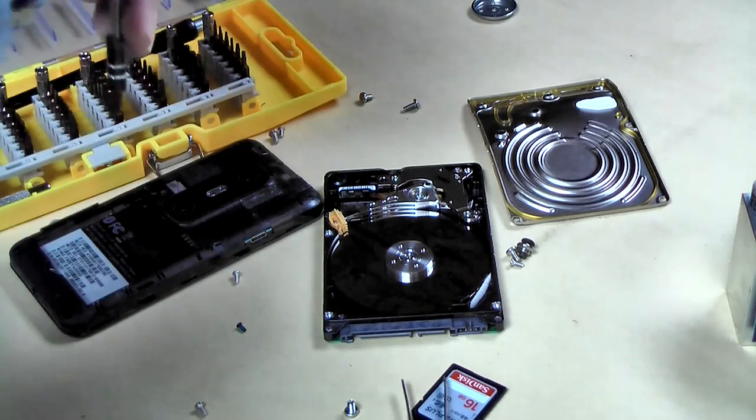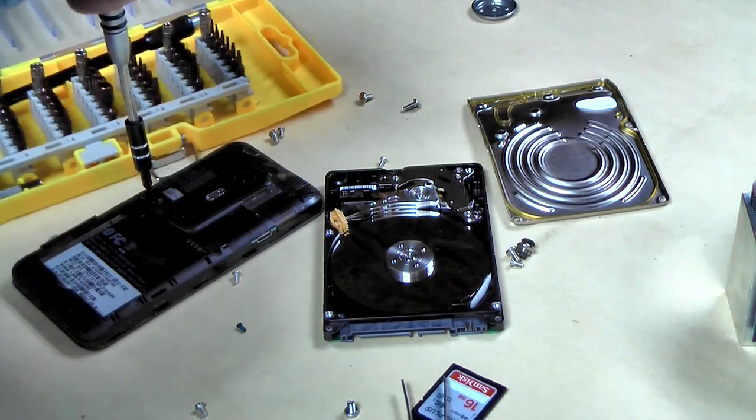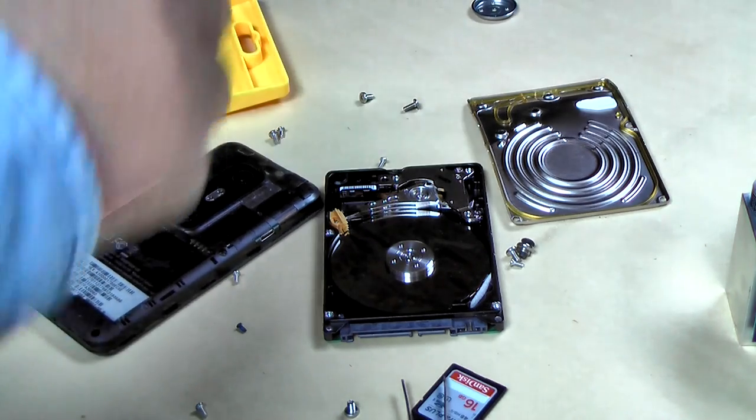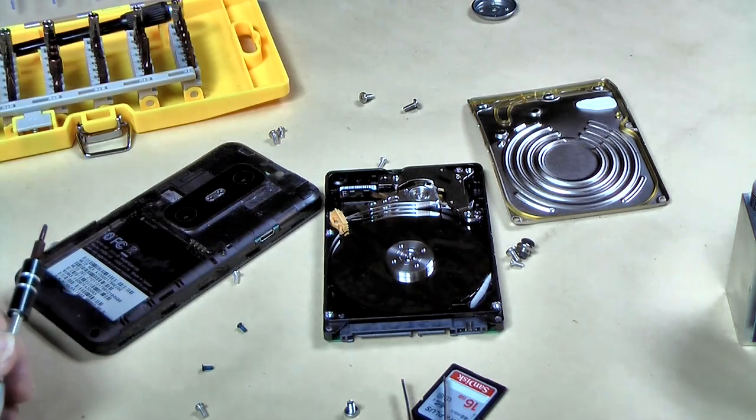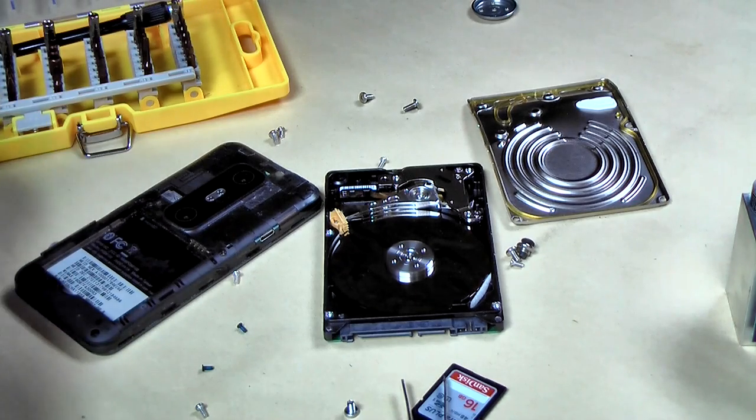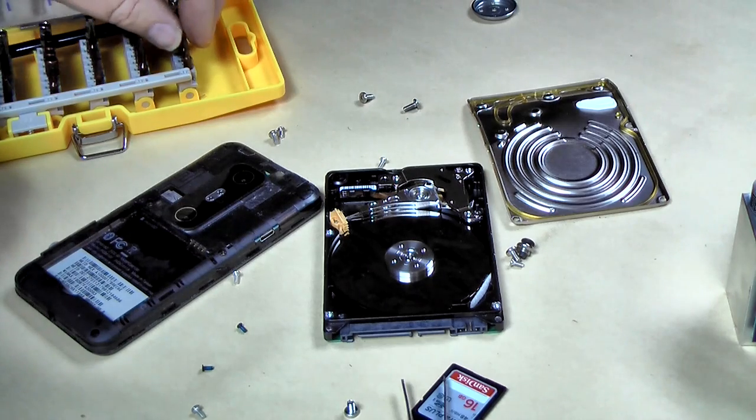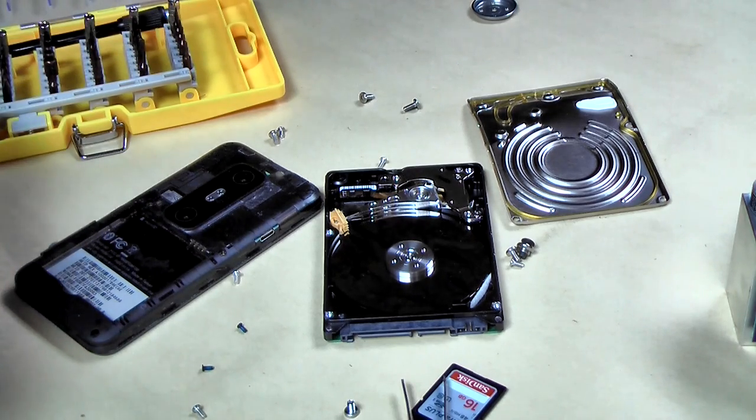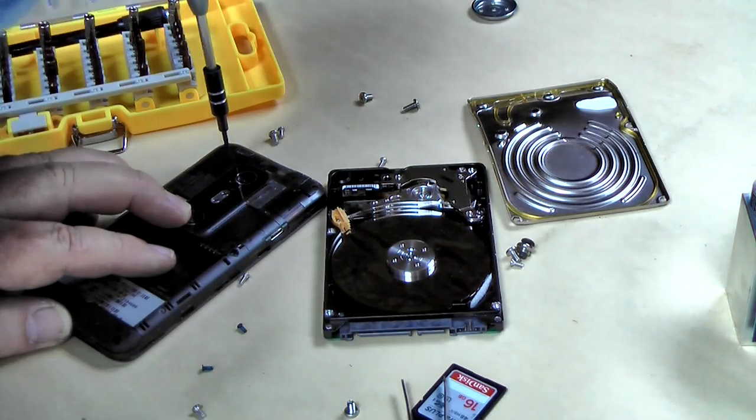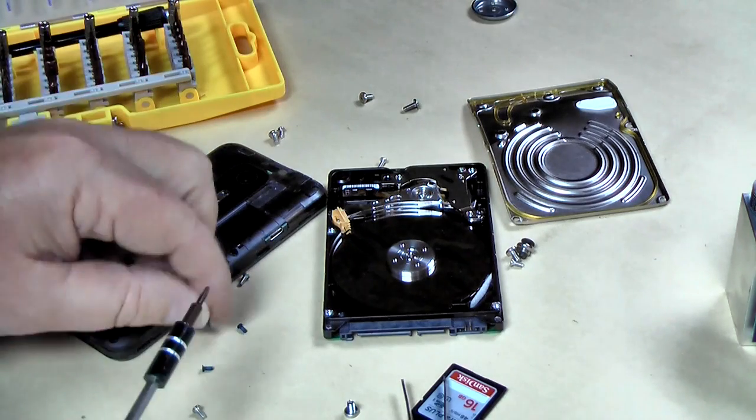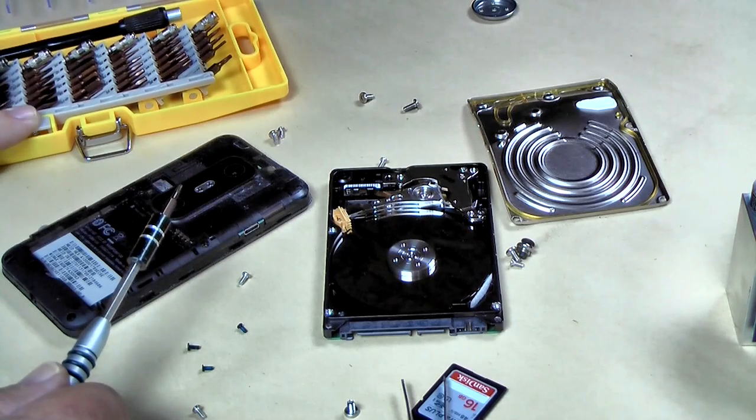I'll tell you what, the screws don't get much smaller than that. I think we're back to a T7 here. Once again we're taking these phones apart. It's not a bit assortment you would have normally in the shop, so this really pays off.